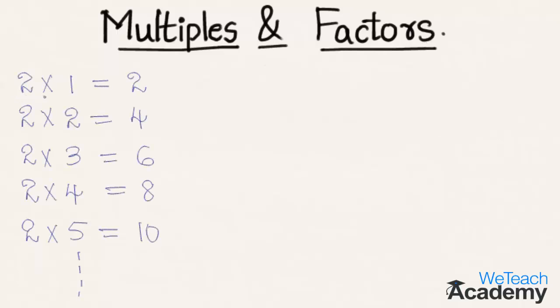So here, 2 one time is 2 and so on. The numbers 2, 4, 6, 8, 10, and so on are formed by multiplying 2 with the natural numbers. These numbers are said to be the multiples of 2.